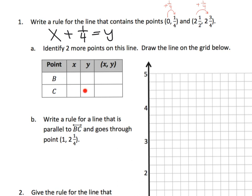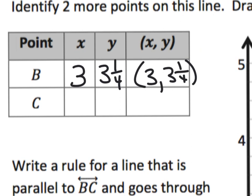If we wanted to identify two more points on this line, let's take three. If we add one-quarter to that, that would be three and a quarter. So our ordered pair would be three and three and a quarter. And then if I want another point, let's do one-half as our x. I'm going to add a quarter to that, so that's going to be three-quarters. So my ordered pair is one-half, three-quarters.